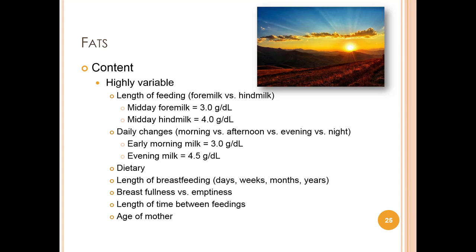Research found that after four months postpartum, macronutrient concentrations of human milk are associated with maternal body weight for height, protein intake, parity, return of menstruation, and nursing frequency. Mothers who produce higher quantities of milk tend to have lower fat and protein concentrations but higher lactose concentrations. Fat levels rise significantly in the second year of lactation. Even the age of the mother may play a role — women 35 and older may contribute more fat to colostrum, possibly due to greater fat synthesis, lower water content, or both.